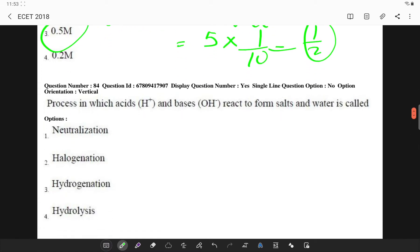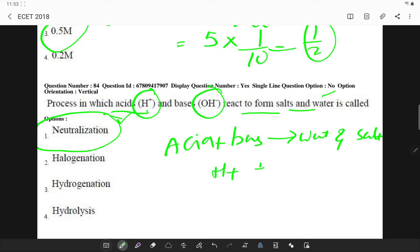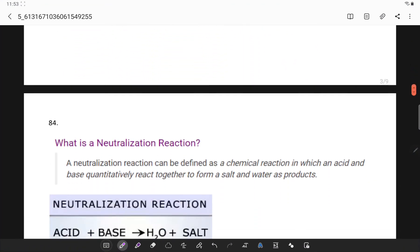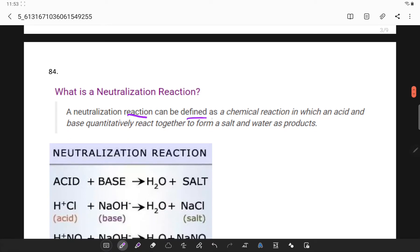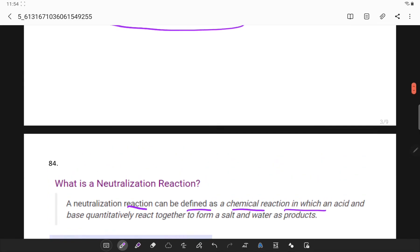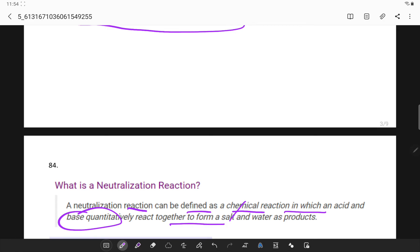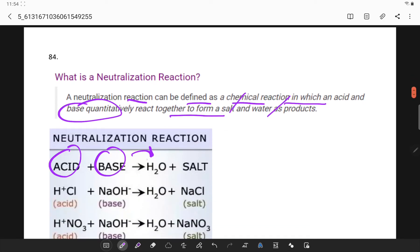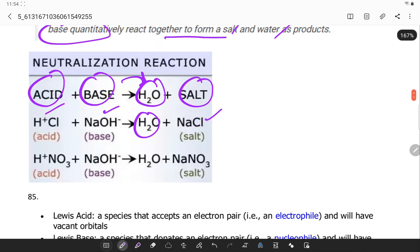What is the process in which acids hydrogen and bases OH react to form salts and water? It is simply neutralization. When an acid is mixed with base we get water and salt. H+ and OH- they combine, we get H₂O. Neutralization is a reaction that can be defined as a chemical reaction in which an acid and a base quantitatively react together to form salt and water as products. Hydrogen chloride and sodium hydroxide will be getting water and sodium chloride.